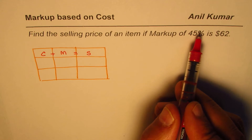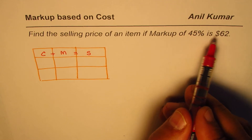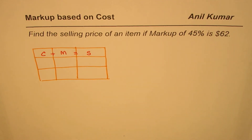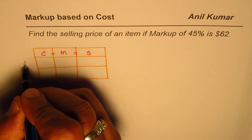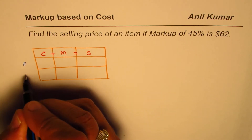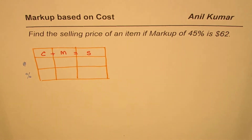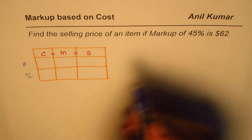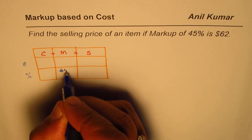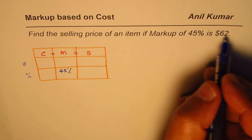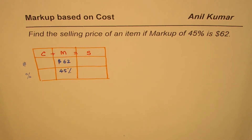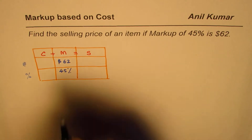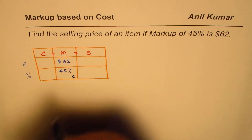So you mark up the cost to get the sale price. What are we given here? We are given that markup is 45% and the value is $62. We'll write the amount and the percent. So markup is 45% and the dollar amount is $62. We know that markup is always based on the cost price.